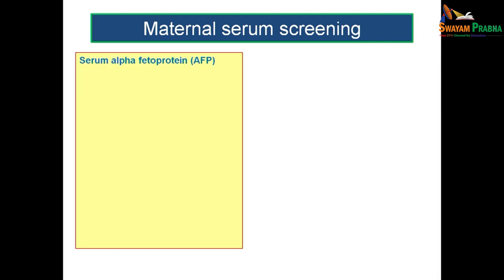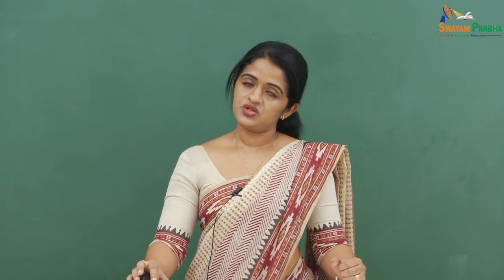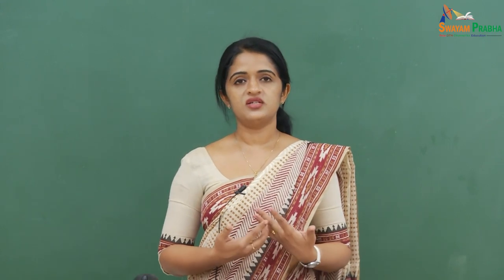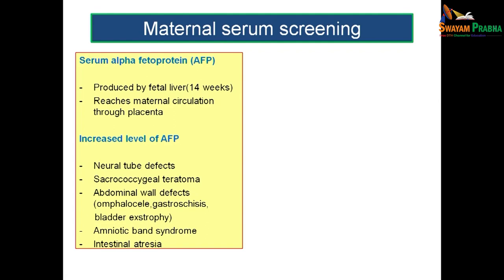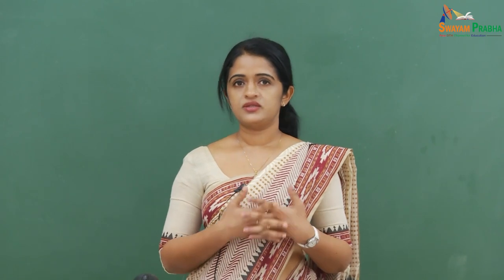Maternal serum screening looks for components in maternal serum to diagnose clinical conditions. Serum alpha-fetoprotein is produced by the fetal liver during 14 weeks of intrauterine period and reaches maternal circulation through the placenta. Increased alpha-fetoprotein is associated with neural tube defects, sacrococcygeal teratoma, abdominal wall defects like omphalocele and gastroschisis, bladder exstrophy, amniotic band syndrome, and intestinal atresia.